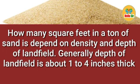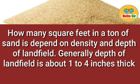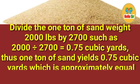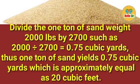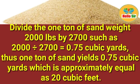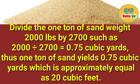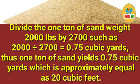Generally the depth of landfill is about one to four inches thick. Divide the one ton of sand weight, 2000 pounds, by 2700: 2000 divided by 2700 equals 0.75 cubic yards. Thus one ton of sand yields 0.75 cubic yards, which is approximately equal to 20 cubic feet.